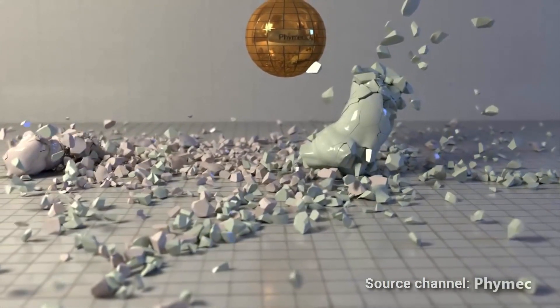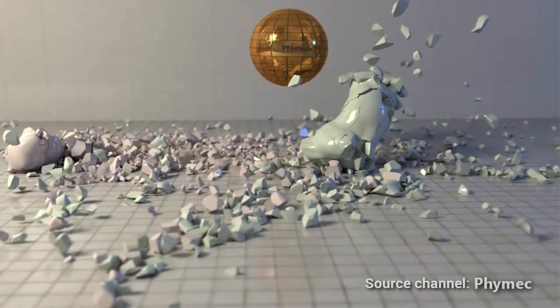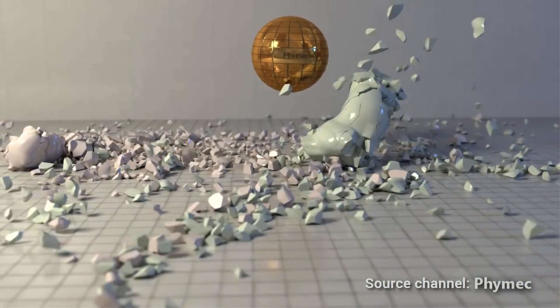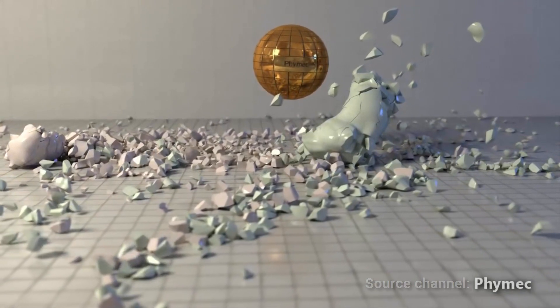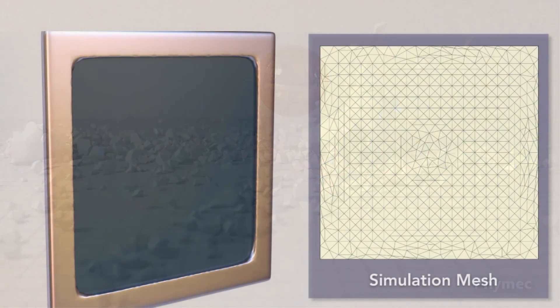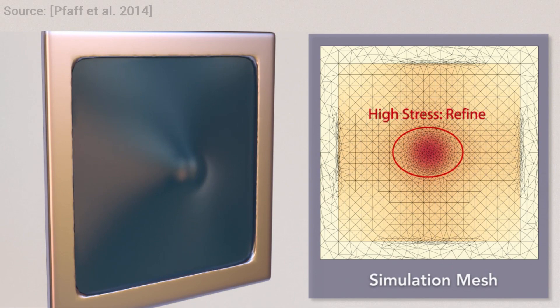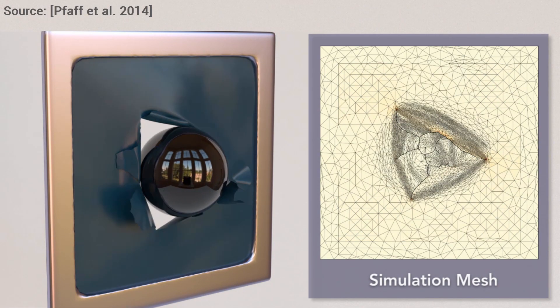Unless you have some tricks up your sleeve. Researchers at UC Berkeley have managed to crack this nut by creating an algorithm that uses more computational resources only around regions where cracks are likely to happen.